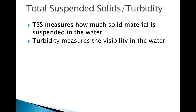Total suspended solids, or TSS, measures how much solid material is suspended in the water. Turbidity measures the visibility of the water. Increases in TSS and turbidity indicate increased human activity in the watershed, such as construction and farming.